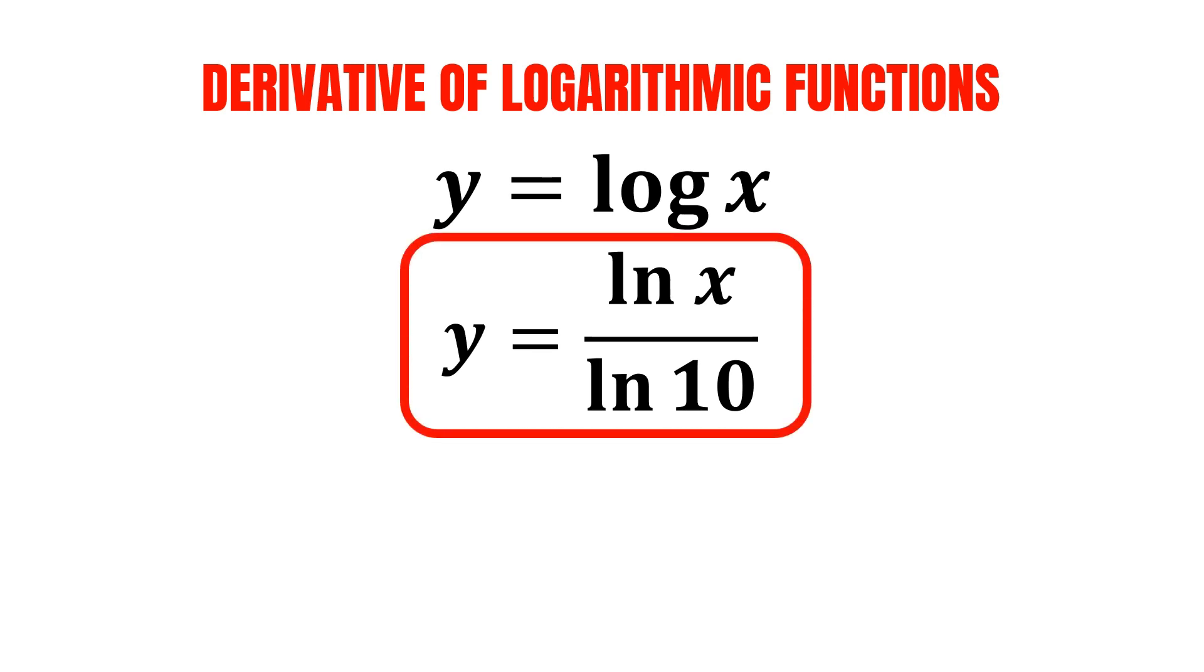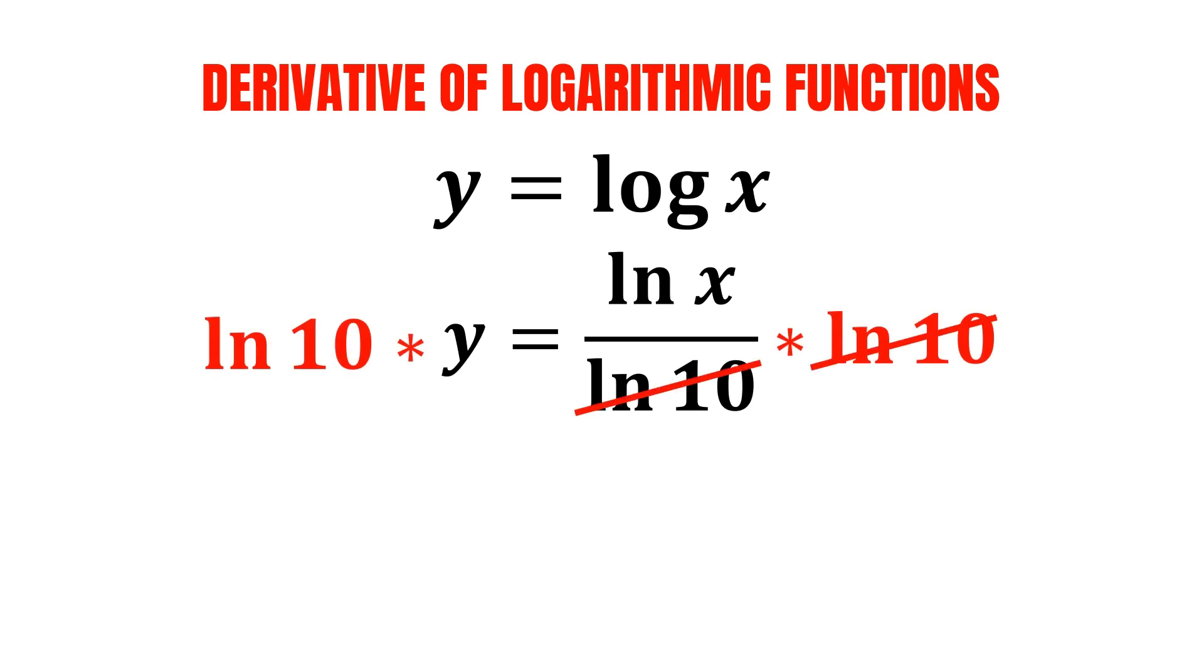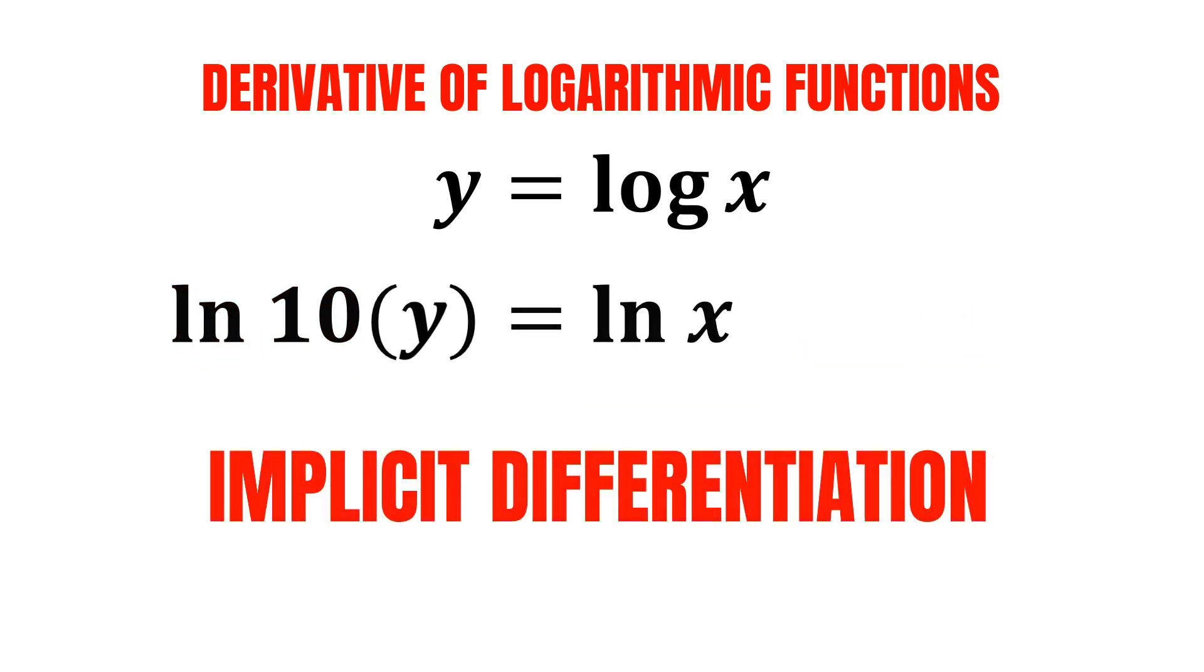Now, we can find the derivative of this directly using the quotient rule, or we can multiply both sides by the natural log of 10, allowing us to apply implicit differentiation.